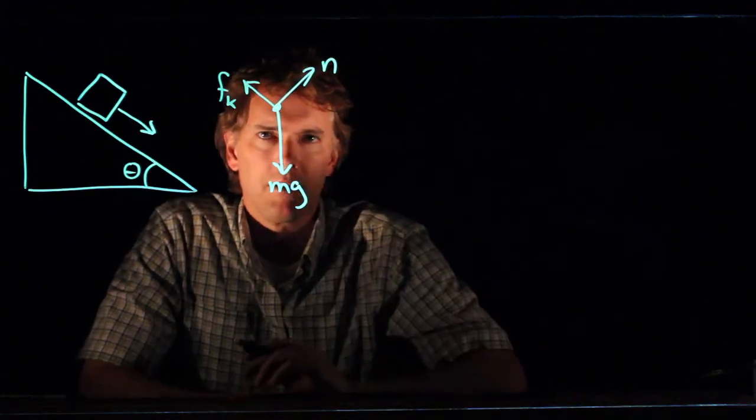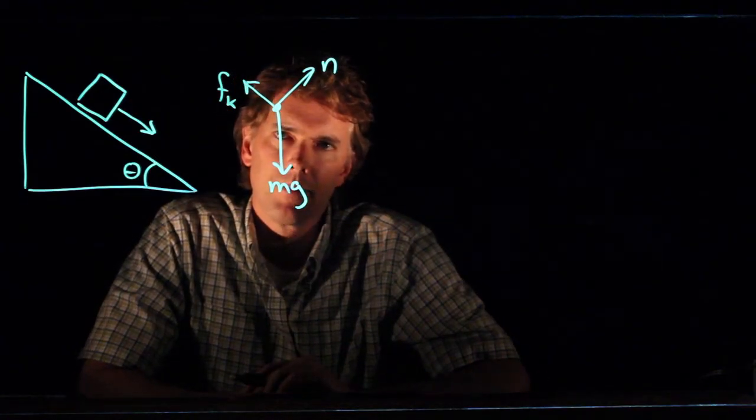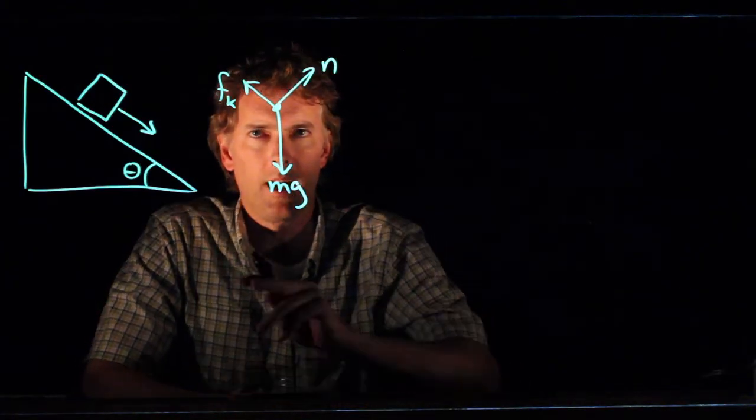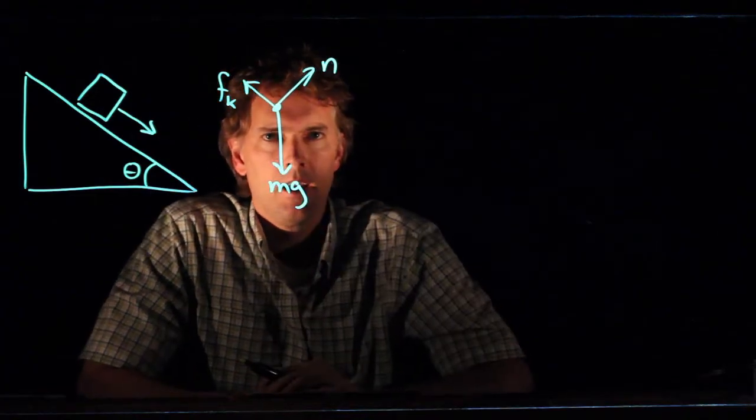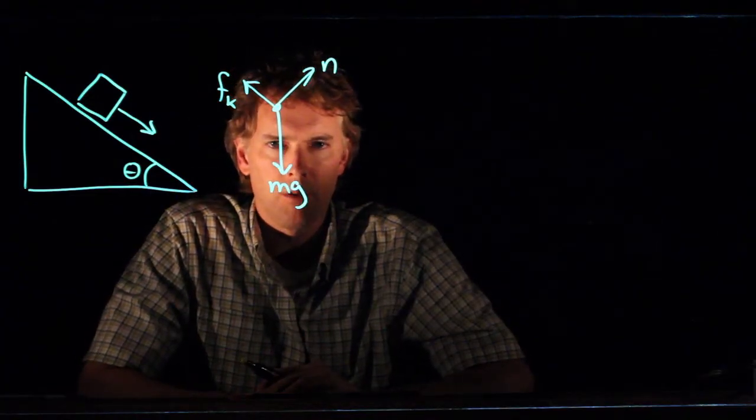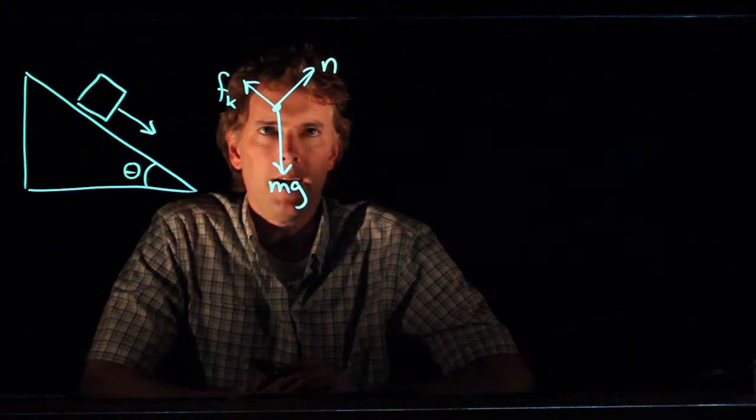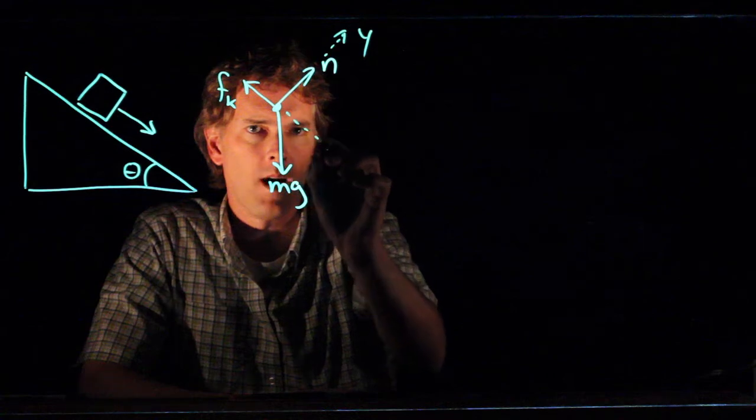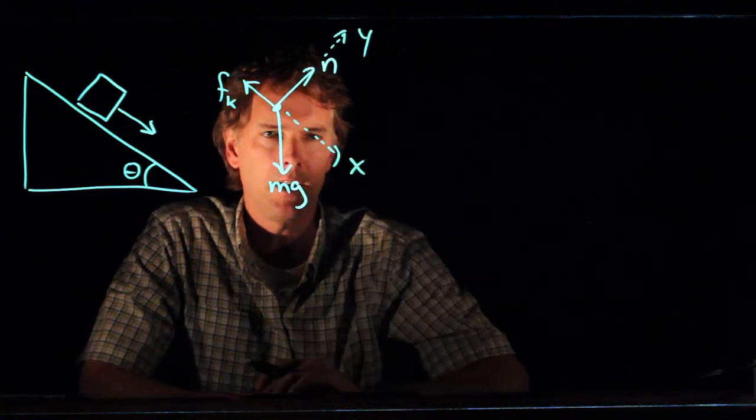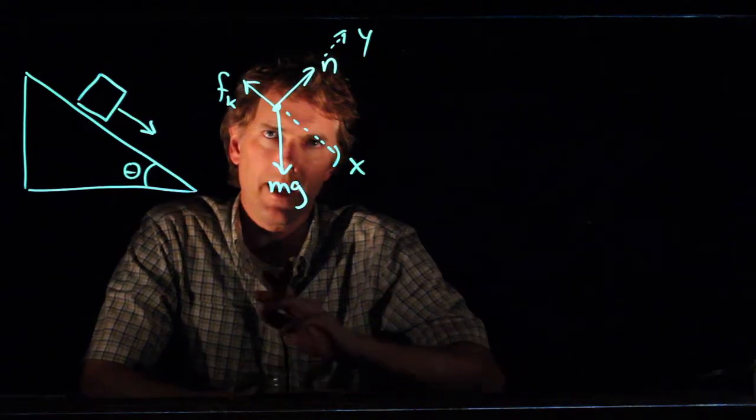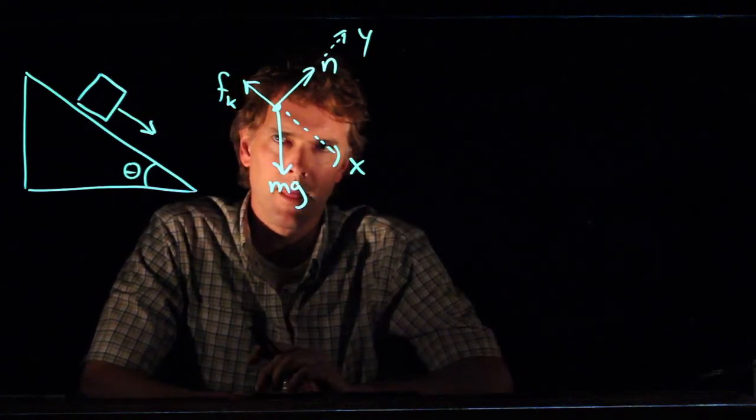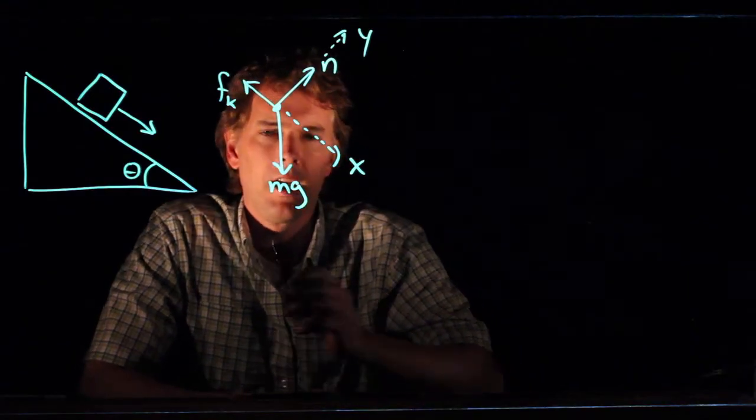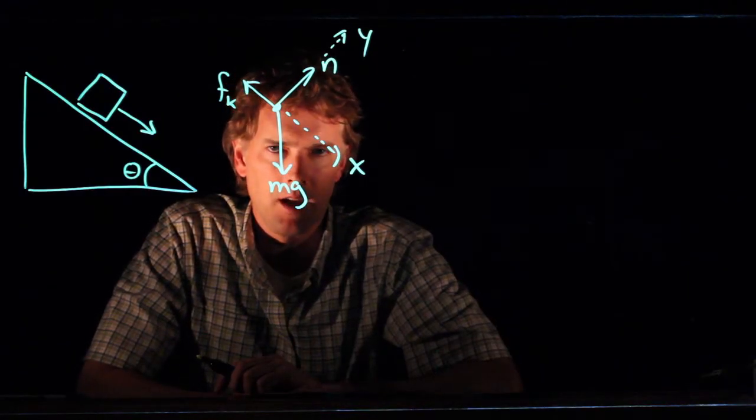Now, when I think about this free body diagram, if I draw a traditional x and y axis, I will have two vectors and an fk that are not along either the x or the y. But if I draw a rotated coordinate system where y is in that direction and x is in that direction, now look what I have done. I have the normal force along y, I have fk along negative x, and now I only have one vector to deal with which is mg.